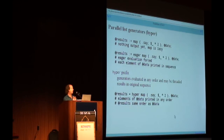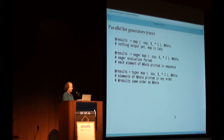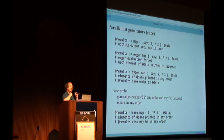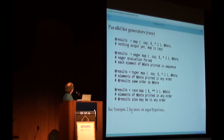Now, if you want everything processed as fast as possible and you don't care what order the results are in when you're done, there's race. With race, generators are evaluated in any order, they can be threaded, and the results can come back in any order. If you say race map, the closure will be executed for all elements of @data as fast as the optimizer wants, in whatever order it wants, and the results aren't reordered. It's a primitive for doing map-reduce. Race, eager, and hyper are in Synopsis 2.